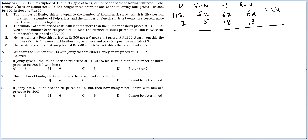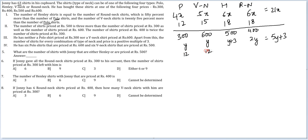Next point: the number of shirts priced at 500 is 3 more than the number priced at 300, as well as the number priced at 600. The number priced at 400 is twice the number priced at 300. So 300 and 600 are equal — call them Y and Y. Shirts priced at 500 are Y+3, and shirts at 400 are 2Y. If 5Y+3 equals 63, then Y equals 12. So we have 12 shirts at 300, 24 at 400, 15 at 500, and 12 at 600.